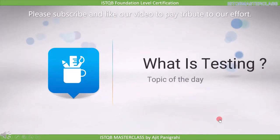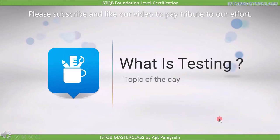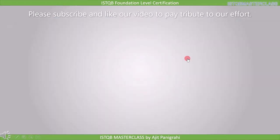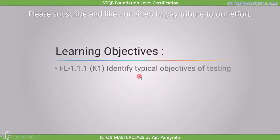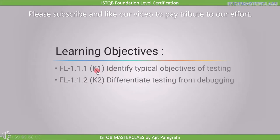In this lecture we are going to understand what is testing. We have two learning objectives under this topic. The first objective is to identify typical objectives of testing, marked as K1, meaning the questions will be direct from this topic so you just need to remember the points. The second objective is to differentiate testing from debugging, marked as K2, meaning you need to understand this topic.